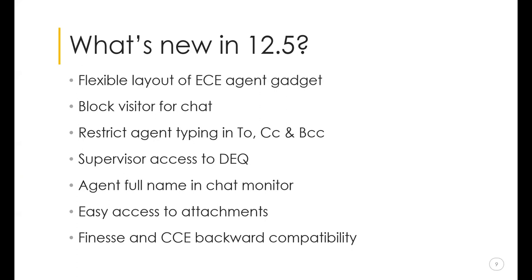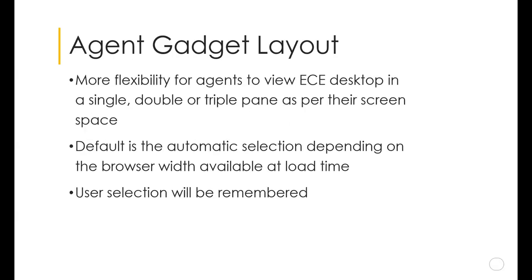We have done many enhancements to further enhance the agent and supervisor experience and make the ECE application more robust and feature-rich. For example, agents can now control their gadget view with the option to view the ECE gadget in a single pane, double, or triple pane. Supervisors can now pick or transfer emails from the default exception queue — a long-awaited feature now enabled with ECE 12.5. We have also introduced shortcut keys for agent availability to align with the Finesse 12.5 capability.